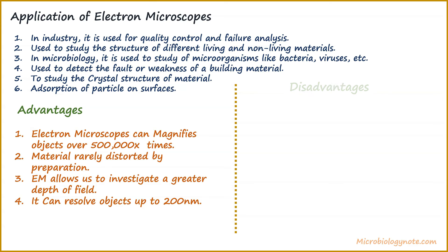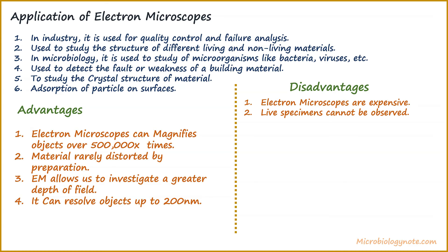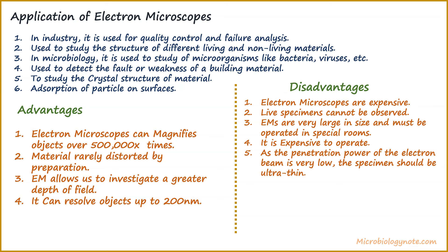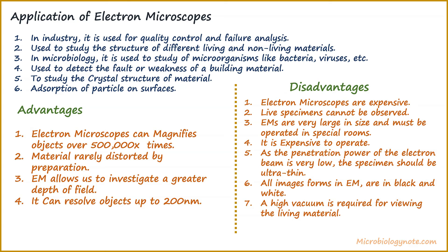Now we will talk about the disadvantages of electron microscopes. Electron microscopes are expensive and expensive to operate. Live specimens cannot be observed. They are very large in size and must be operated in special rooms. As the penetration power of the electron beam is very low, the specimen should be ultra-thin. All images formed in an electron microscope are in black and white. A high vacuum is required for viewing material. Specialized expertise is required to handle it, and it is affected by magnetic fields.